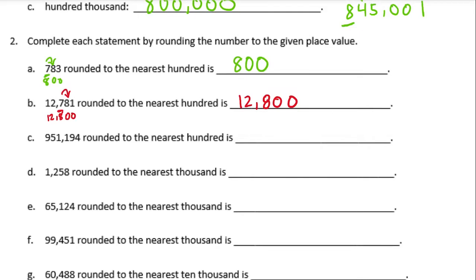Now 951,194 rounded to the nearest hundred. The hundreds place is the one right here. Next to it is a nine. That nine is five or higher, so the one rounds up to a two. Everything behind it becomes a zero, and everything in front stays the same. We get 951,200.